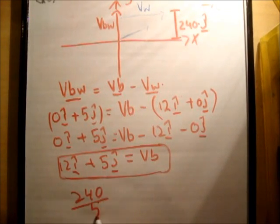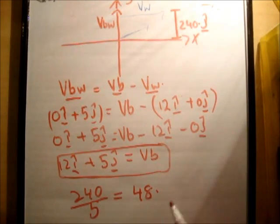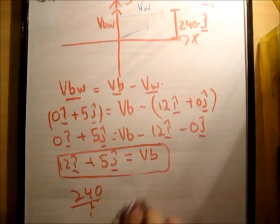So the distance is 240, divided by the speed, 5, and that's 48. And that is seconds. So it takes 48 seconds for it to cross the river. And we're also asked to find how far downstream it will have traveled at this stage.